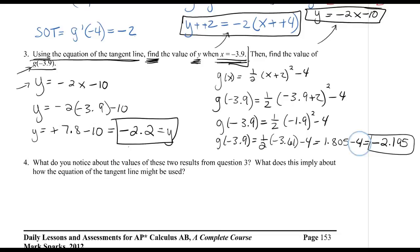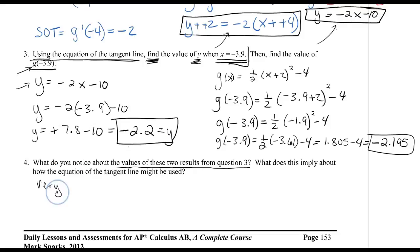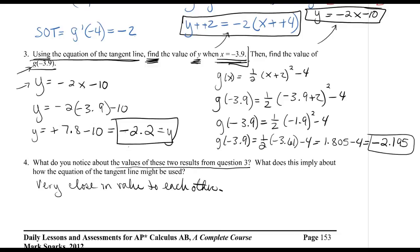Question 4 asks me to compare these two values. The tangent line gave negative 2.2, and the actual function gave negative 2.195. These two values are very close to each other.